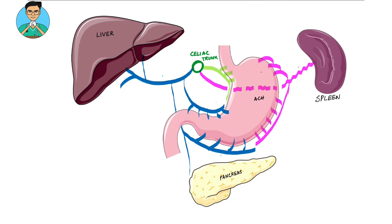In this USMLE high yield video, we will talk about the blood supply of the stomach. Along with that, we will also be able to learn the blood supply of liver and spleen.